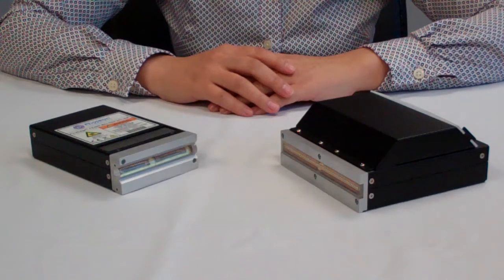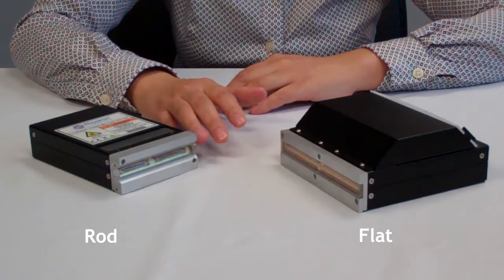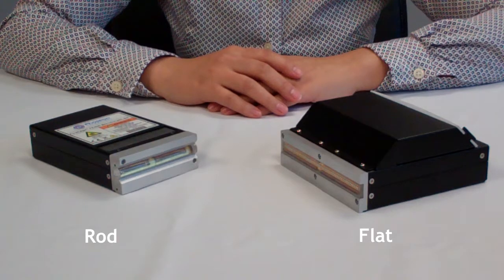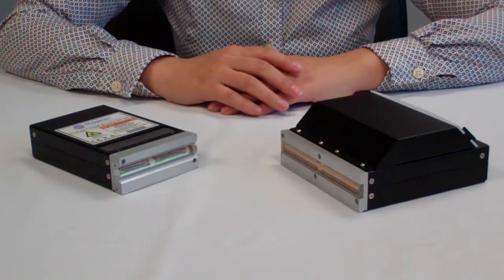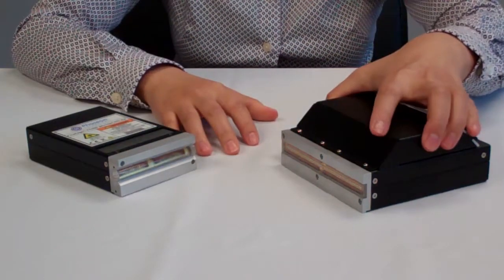The FireEdge FE400 is available with both flat and rod window types. Both of these window types are available in 5 sizes. This is a 80x10 and this is a 120x10.